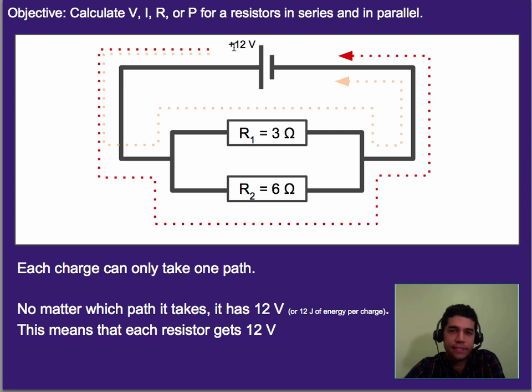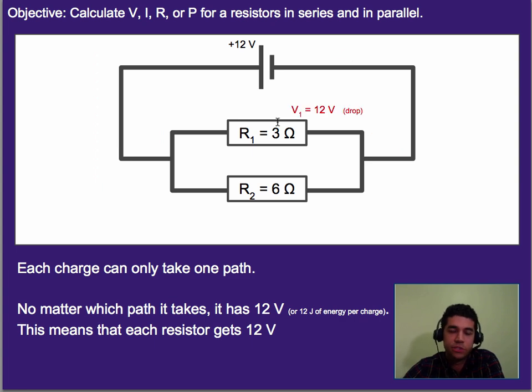Well, no matter what path it takes, it has 12 joules of energy per each charge or unit charge, which means it has 12 volts as it goes through. Well, if it has to get rid of all 12 volts by the time it reaches over here to the negative side of the battery, then that means there's only one place for it to get rid of all of that, or one thing to cause the voltage drop. This means that each resistor actually gets a 12 volt voltage drop.